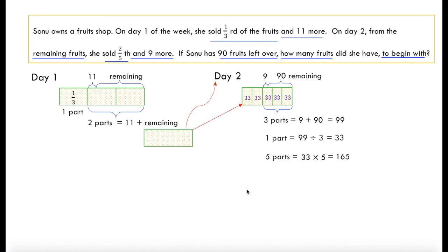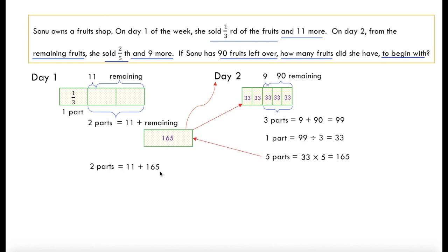So the remaining on day 1 is actually 165 fruits. Now we go back to day 1 because we want the fruits to begin with. We have 2 parts equal to 11 plus the remaining fruits from day 1, which is 165. So that is 11 plus 165, which gives us 176.